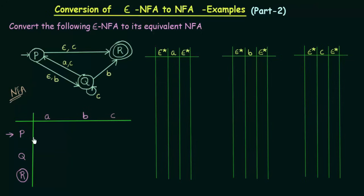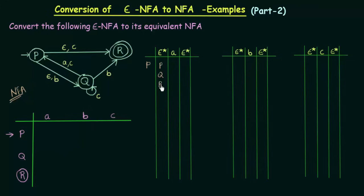I have already drawn the transition table. We have states P, Q and R and inputs A, B and C. We have to find the Epsilon closures for inputs A, B and C since there are three input symbols. Let's start with the first state, P. P's Epsilon closure: P on Epsilon can go to P itself, it can also go to R and also to Q. That means P on Epsilon closure can go to P, Q and R.